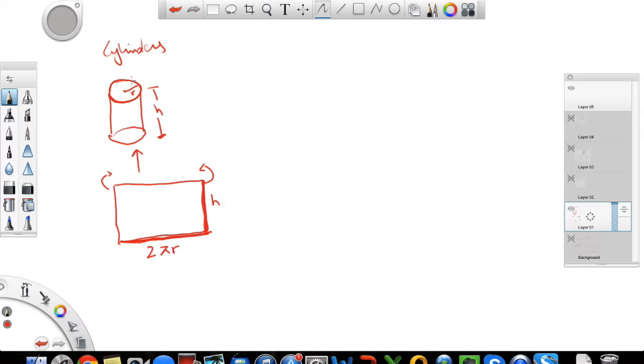Circumference of a circle is given by 2 pi r. And that's this side of the rectangular sheet. So this is good to know how a rectangular sheet ends up being a cylinder and what's the relationship between the sides of the rectangular with the height and the radius of the cylinder.